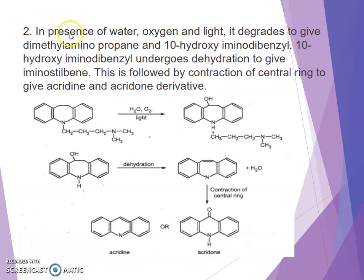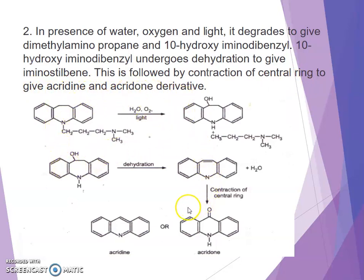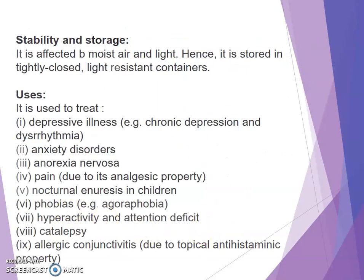Second chemical property: in the presence of water, oxygen, and light, imipramine degrades to give dimethylaminopropane and 10-hydroxy iminodibenzyl. The 10-hydroxy iminodibenzyl undergoes dehydration to give iminostilbene, followed by contraction of the central ring to give acridine and acridone derivatives.